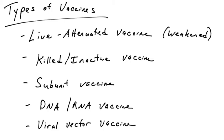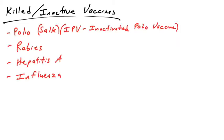Now, it's not always easy to generate a weakened version of a virus. It's not easy to evolve these viruses in the lab all the time. An easier way to generate immunity would be to use a killed or inactivated vaccine, or a subunit vaccine, which we'll talk about in this video. So first, we're going to talk about killed or inactivated vaccines.